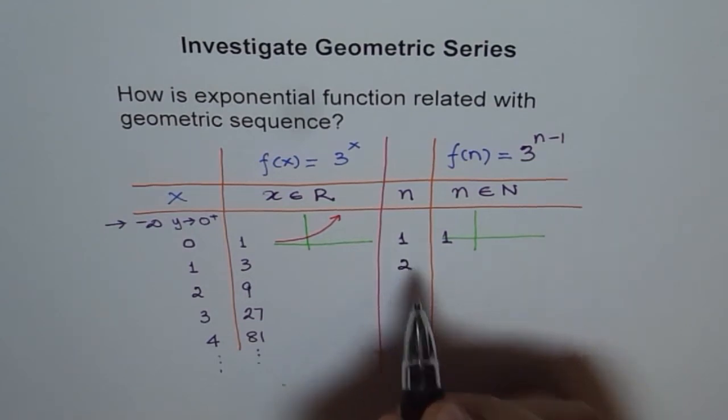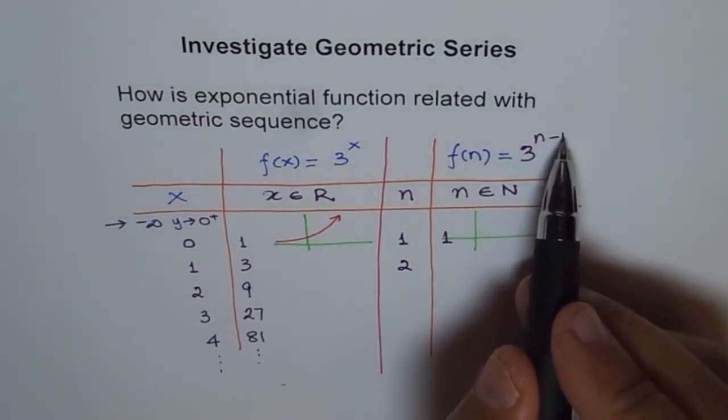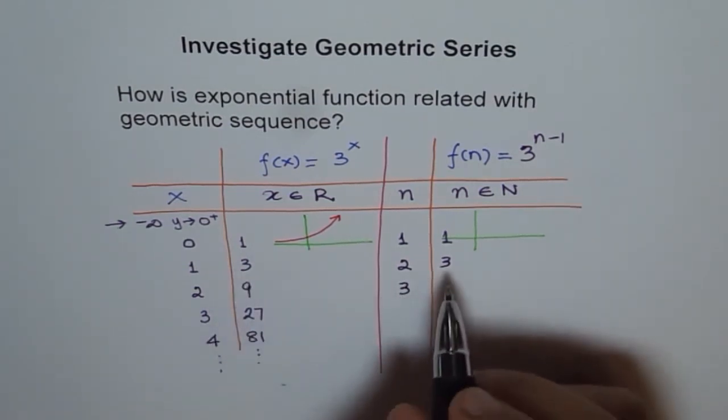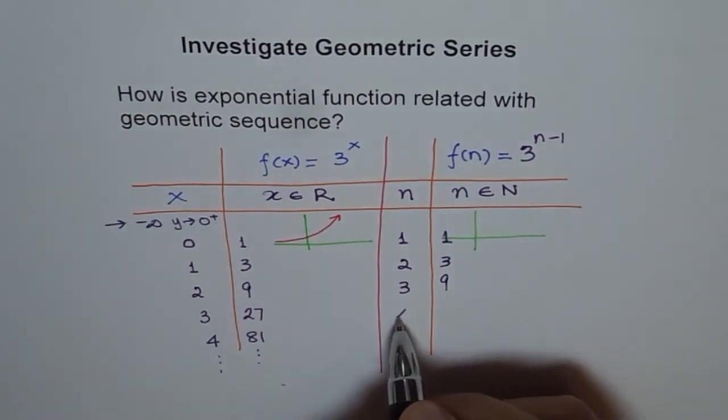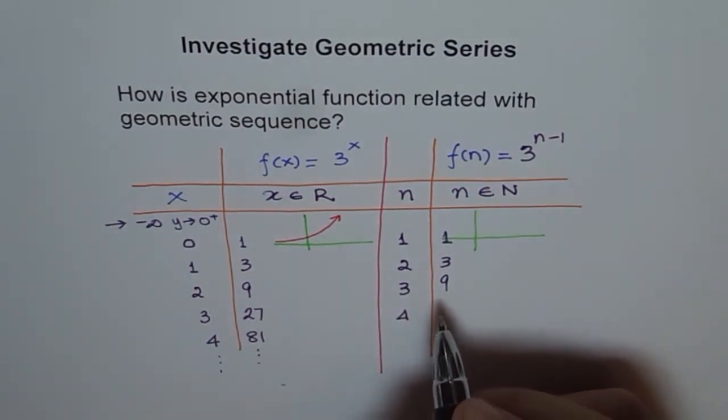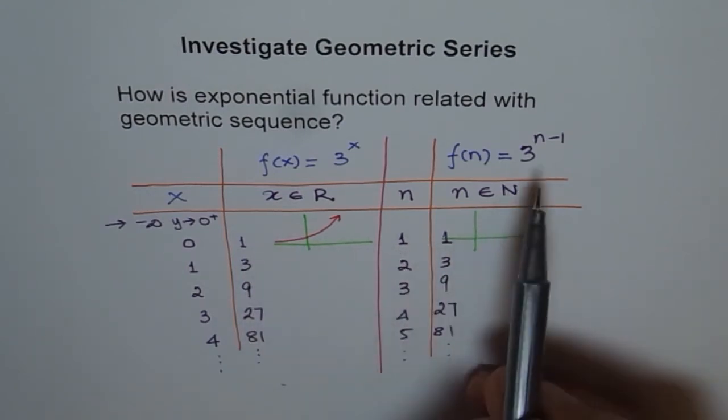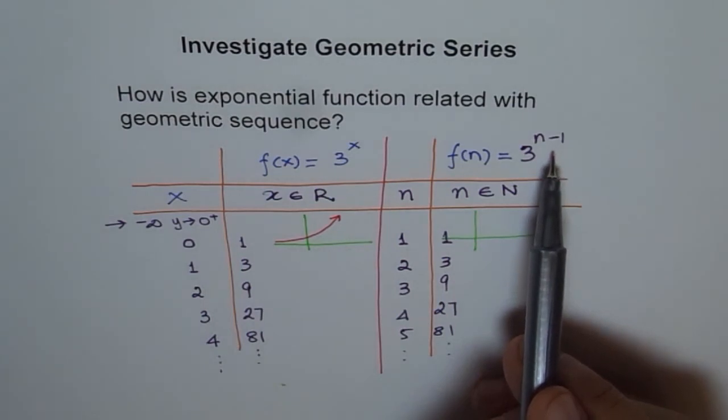If I put 2 here, then 2 minus 1 is 1, 3 to the power of 1, which is 3. So I get the same sequence. For 3, I get 9. For 4, I get 27, and so on. But for 5, I get 81, and in general, it is n minus 1. Are you getting the point? So there is a relation, and the relation is so good. We can get the same values. But this value is less 1, n minus 1.